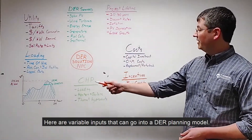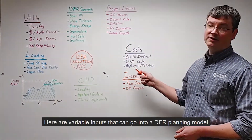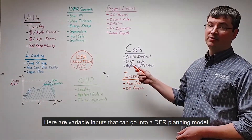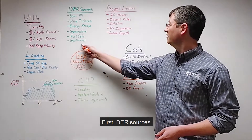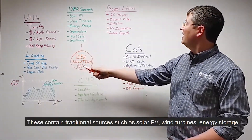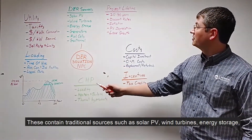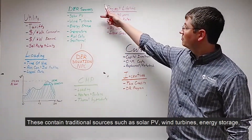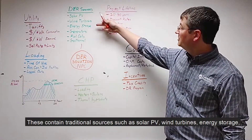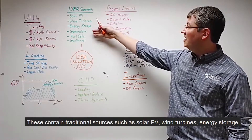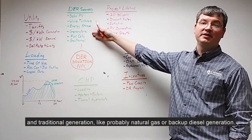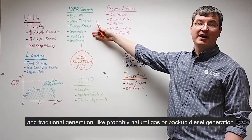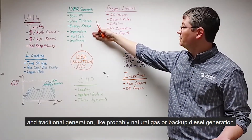Here are the variable inputs that can go into a DER planning model. First, DER sources. These include traditional sources such as solar PV, wind turbines, energy storage, and traditional generation like natural gas or backup diesel generation.